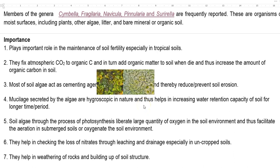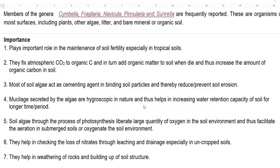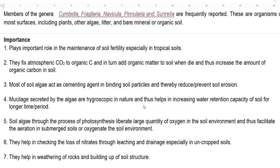Soil algae are found to have a lot of mucilage around them, which is hygroscopic in nature, helping to increase the water retention capacity of the soil for a longer period. During photosynthesis — the conversion of atmospheric carbon dioxide to cell carbon — a lot of oxygen is evolved. This oxygen facilitates aeration for submerged soil and involves oxygenation of the soil environment.